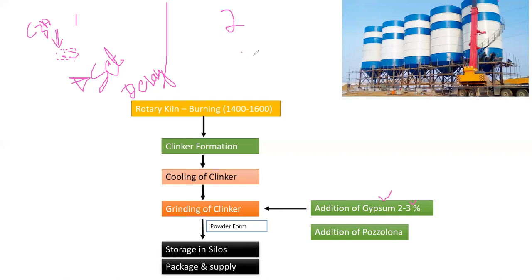In case two, we have cement particles along with gypsum. When water is added, C3A reacts first — but since we have gypsum, gypsum acts like a retarder. Gypsum will not allow C3A to react with water immediately. Instead, gypsum forms a kind of protective layer around the cement particles.